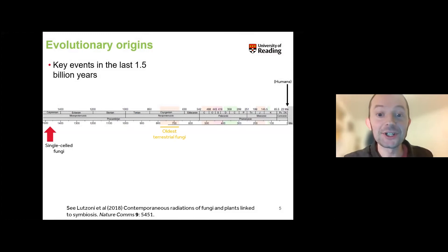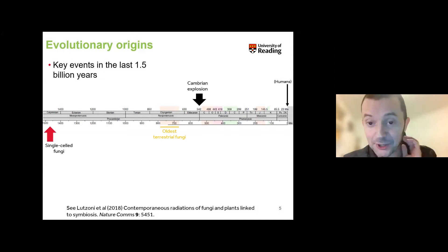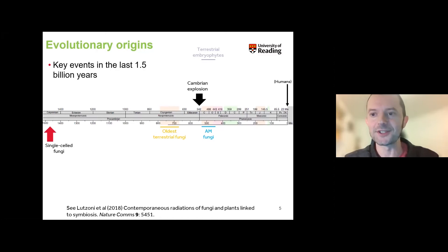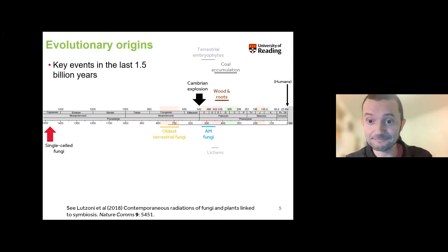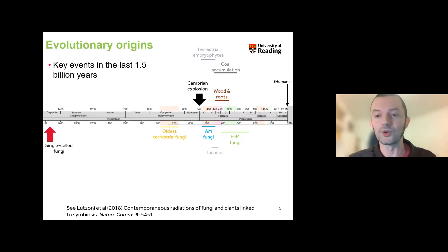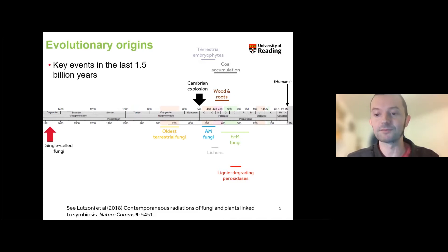The oldest terrestrial fungi appeared about 700 to 800 million years ago. Here's the Cambrian explosion at the end of the Ediacaran, and we have terrestrial embryophytes and AM fungi appearing somewhat simultaneously — somewhere around 500 to 440 million years ago — along with the appearance of lichens. Wood and roots appear next, plants starting to form woody structures with roots infiltrating the soil, coal beginning to accumulate. ECM fungi appear after the development of roots and coal accumulation, appearing to have evolved from white rot and brown rot — these lignin-degrading peroxidases appear, and then coal accumulation tails off.